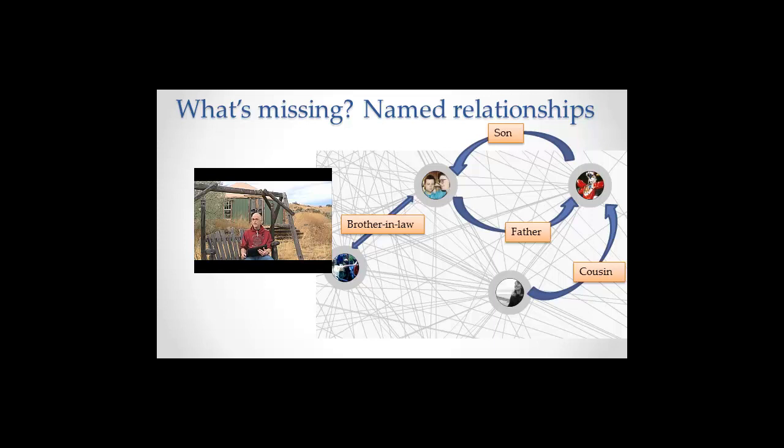And we'll see this problem over and over again in information organization is that theoretically, there's all sorts of ways that people are related. But do I really want to think about it and write it all down? That would take me forever. And I don't actually know necessarily what I think about all the different ways I'm connected. It's very, very complicated.